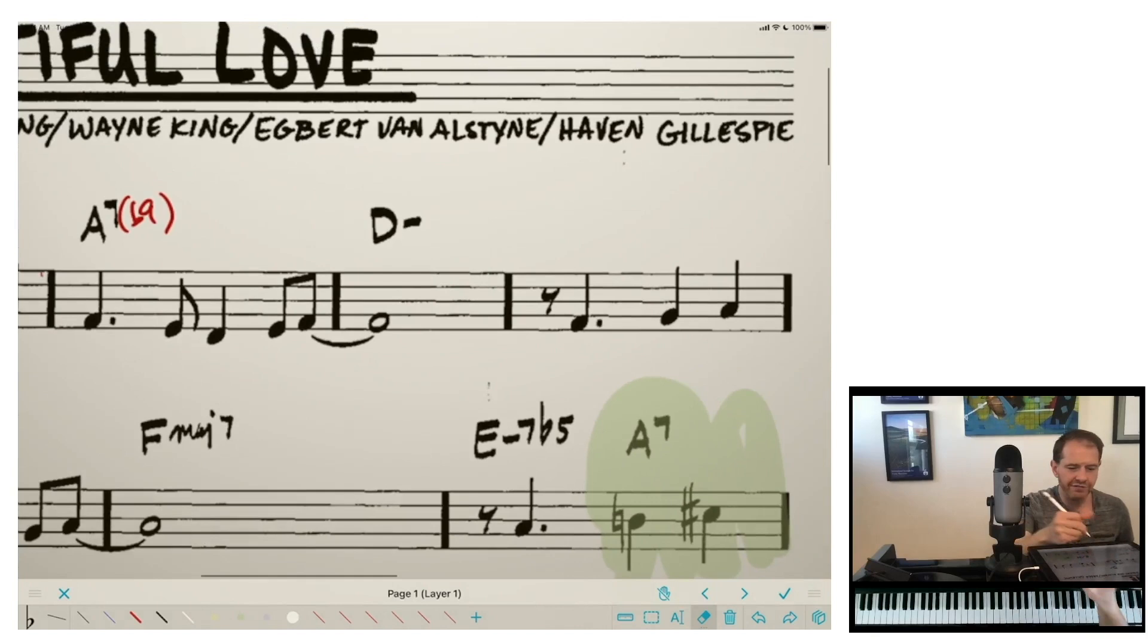Now, I'd be remiss in terms of this chart if I didn't mention that we have all these D minuses with no indication of what to do with them. And this is pretty common in the real book. They frequently write minor, tonic minor chords without any added 7th or upper extensions.